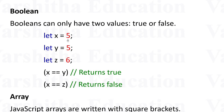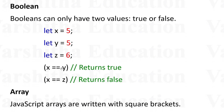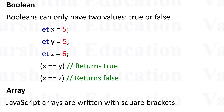Let x equal 5, let y equal 5, let z equal 6. Now, if you want to check: x is equal to y — you can check the true statement. It returns true. Right — the condition is satisfied, the boolean value is true.